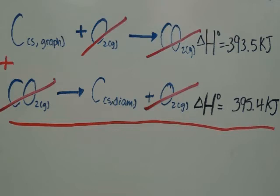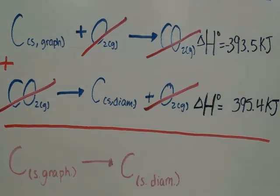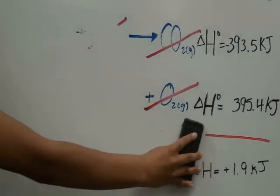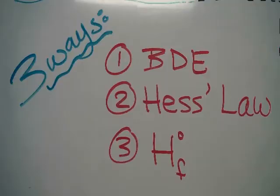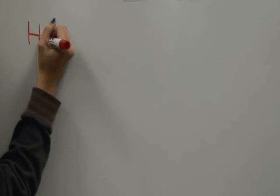Cross-out molecules appear on both the reactant and product side, and you get graphite yielding diamonds. Now you can add the two delta H values together to find the solution: positive 1.9 kilojoules. Number 3: Standard heat of formation.